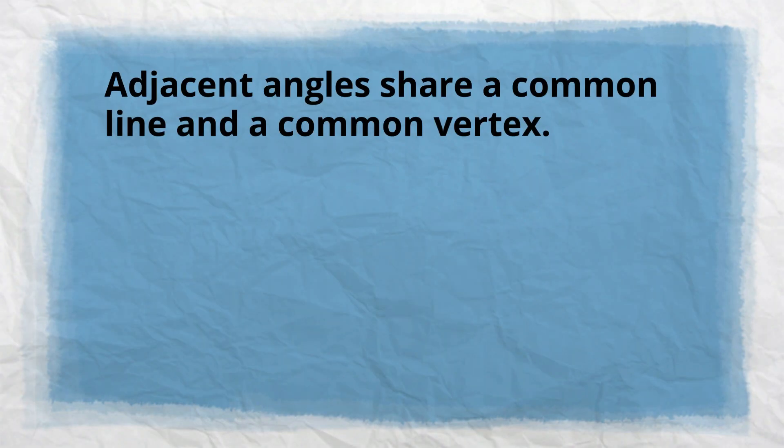Adjacent angles share a common line and a common vertex, which is a point where the two lines meet.